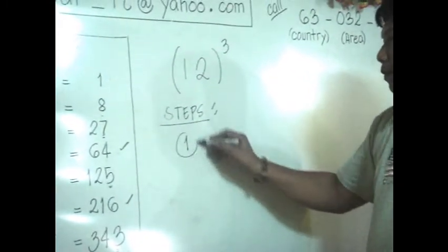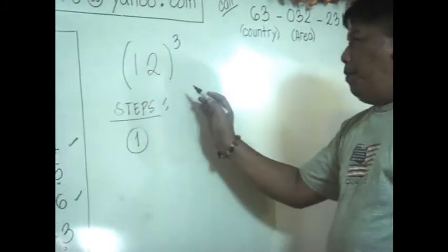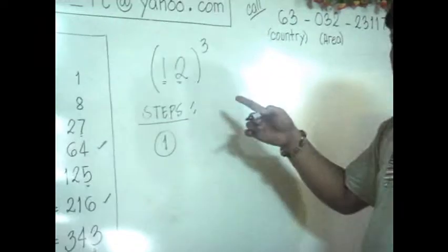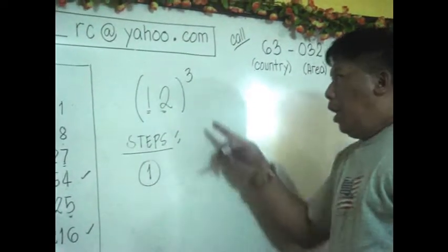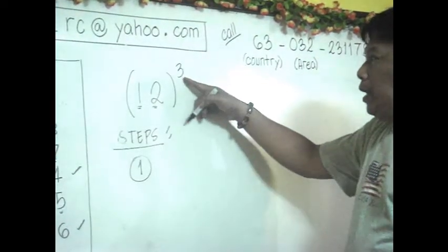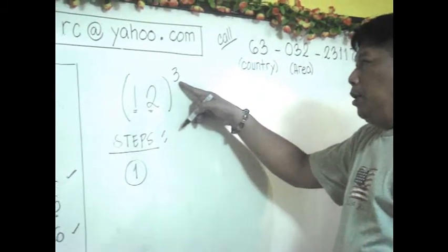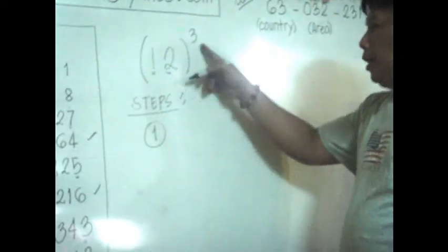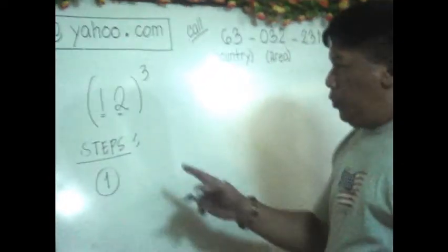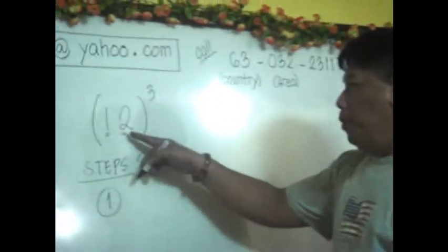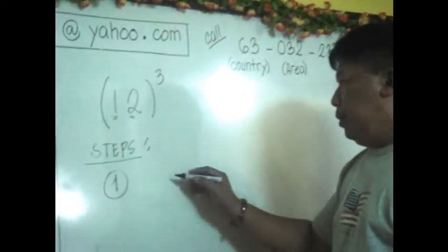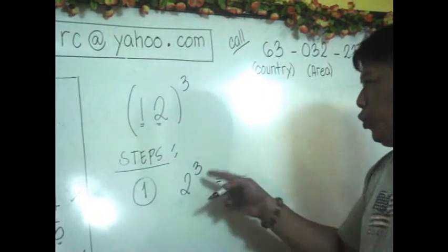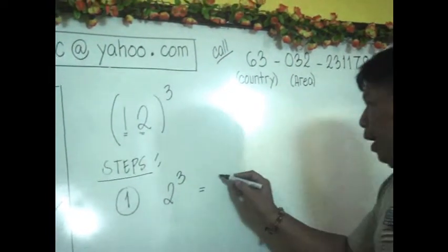First, remember that in the two-digit number 12, we consider 1 as the first digit and 2 as the second digit. The exponent 3 is our power. Step 1: cube the second digit. Cubing 2, as we have learned, gives us 8.